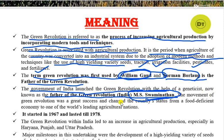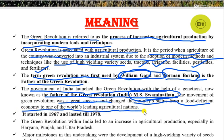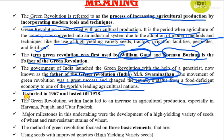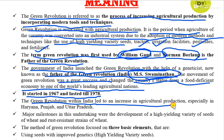The green revolution was a great success and changed India's status from a food deficient economy to one of the world's leading agricultural nations. The green revolution in India lasted for a period of about 11 years, from 1967 to 1978.